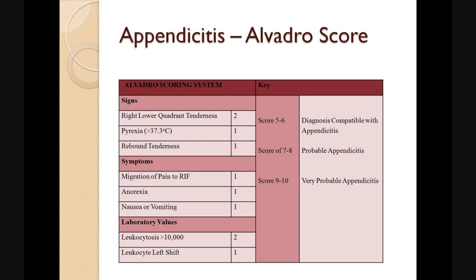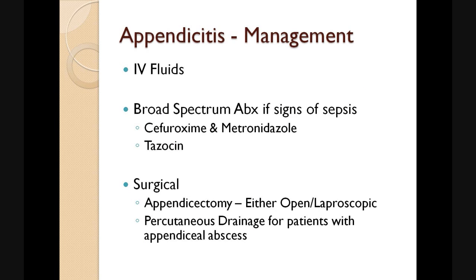A score greater than 5 suggests that appendicitis is likely compatible with the diagnosis, and a score greater than 9 means appendicitis is very probable. Management-wise, we want to ensure the patient has adequate IV fluids and clear observation of urine output. Patients should be placed on broad-spectrum antibiotics if there are any signs of sepsis, such as cefuroxime and metronidazole or tazocin. Definitive management is through surgical intervention in the form of an appendicectomy, which can be open or laparoscopic depending on the surgeon's preference and the patient's ASA grade or body habitus. Occasionally, following CT scan, we find an abscess next to the appendix, which may be appropriate for percutaneous drainage inserted by an interventional radiologist under guidance.